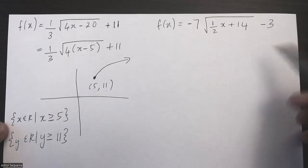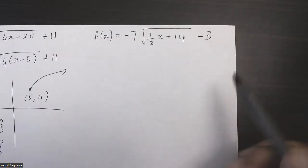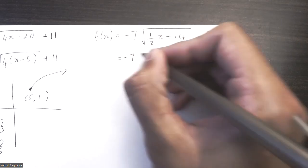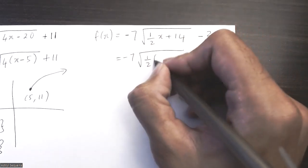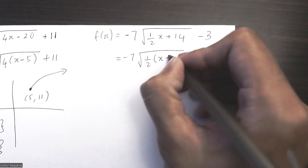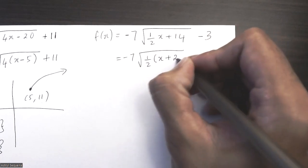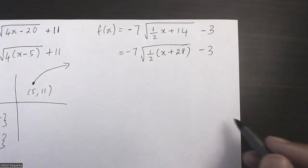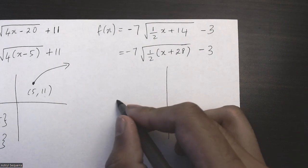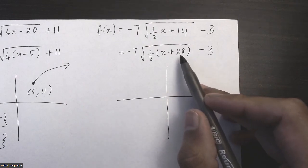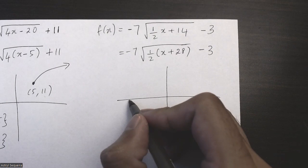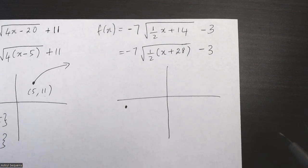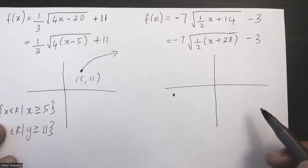Let's try the second radical function. We have to factor out the k value — negative 7 root of (1/2), and dividing 14 by 1/2 gives us 28, so we get x plus 28. Sketching this out, the x value of the starting point is negative 28 and the y value is negative 3.